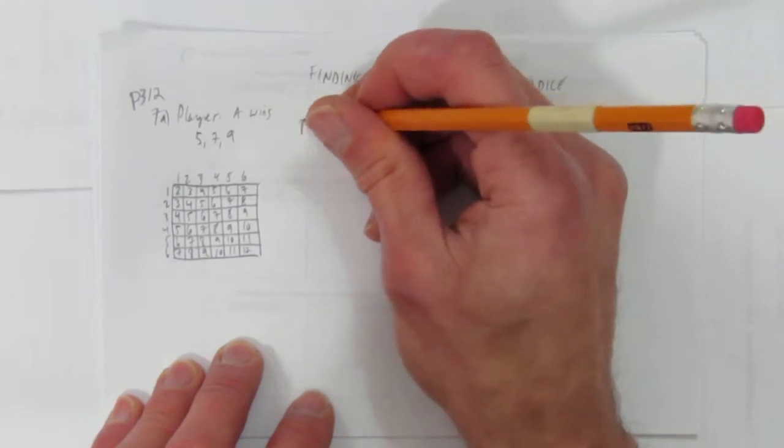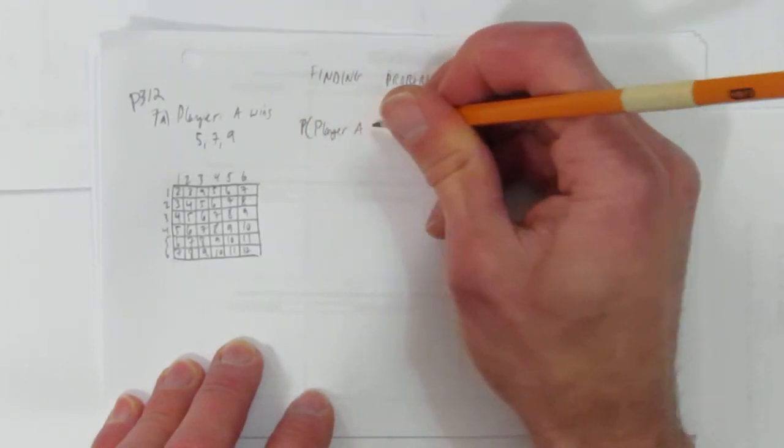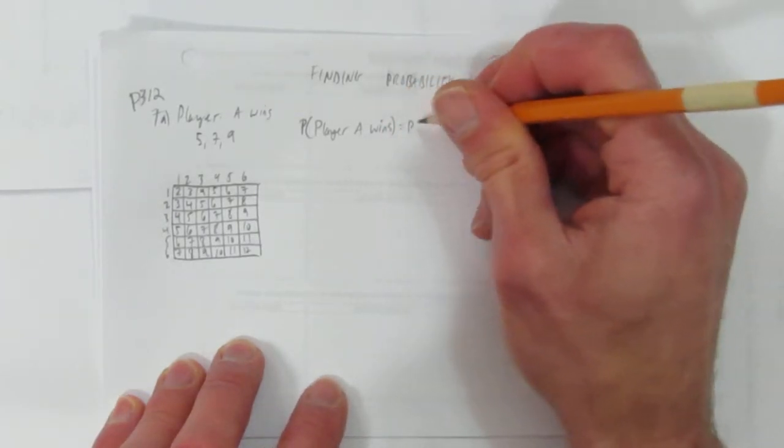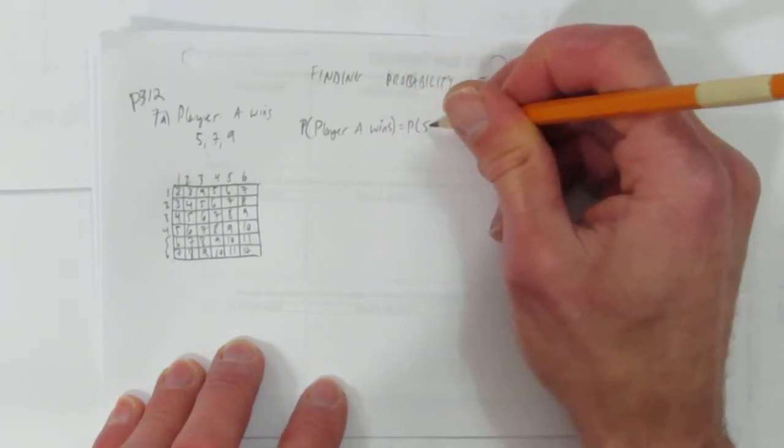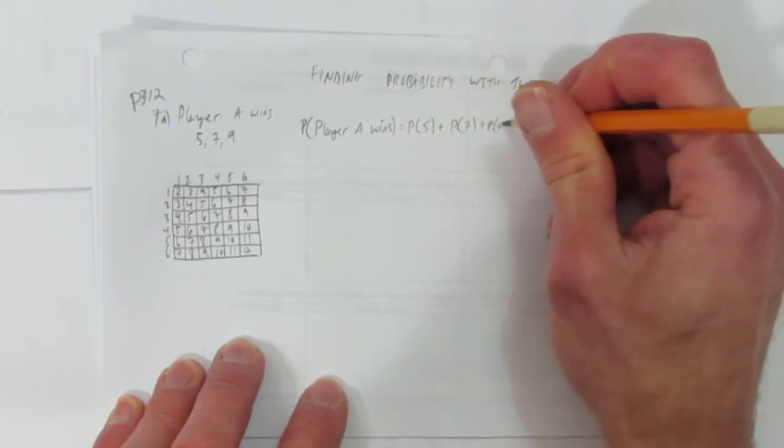So what's the probability that player A wins? Well, the probability that player A wins is just the probability of rolling a 5 plus the probability of rolling a 7 plus the probability of rolling a 9.